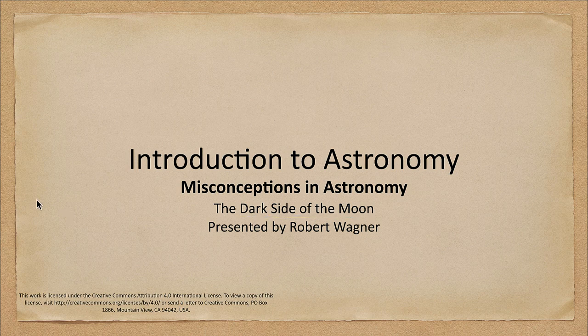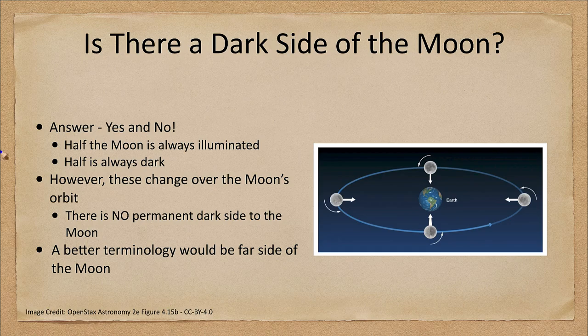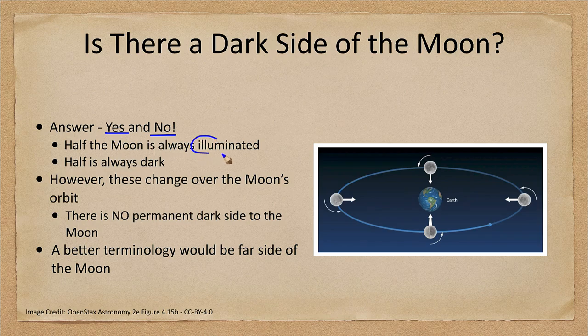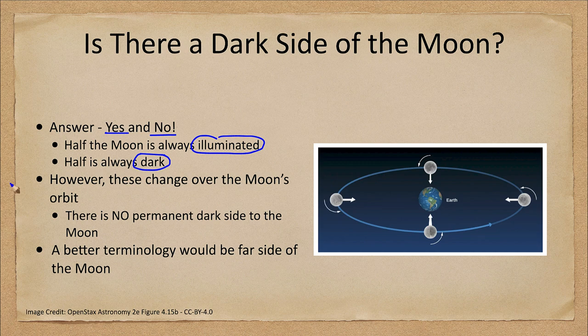So is there a dark side to the moon? Well, there's a split answer here, yes and no. Technically half of the moon is illuminated, so half of it is always illuminated and half is dark. So there is always a dark side to the moon.